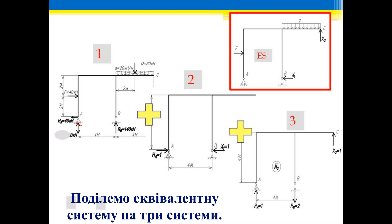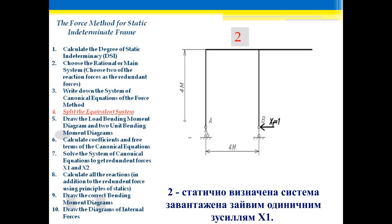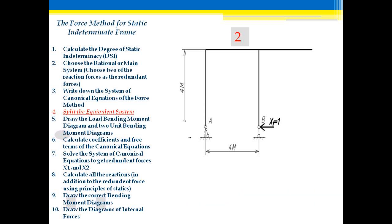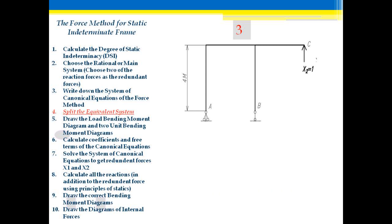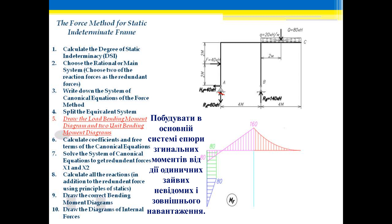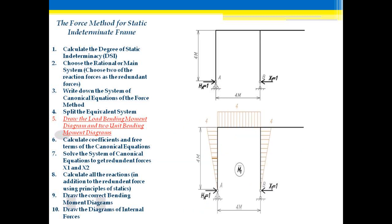Split the equivalent system into three parts: first, a statically determinate system acted upon by the applied loads; second, a statically determinate system acted upon by the redundant force X1; and third, a statically determinate system acted upon by the redundant force X2. Then draw the load bending moment diagram and two unit bending moment diagrams.